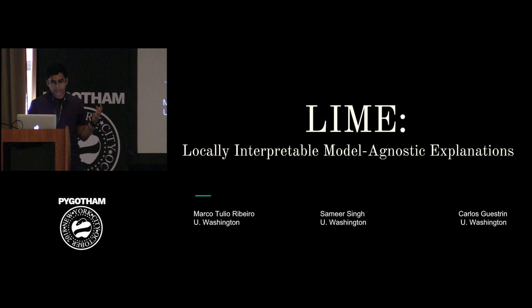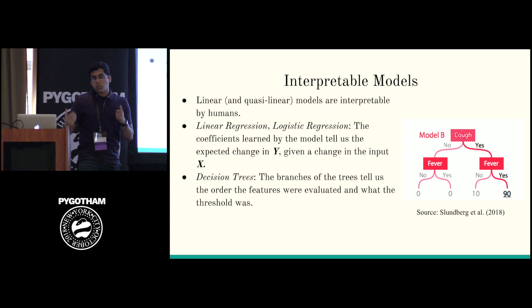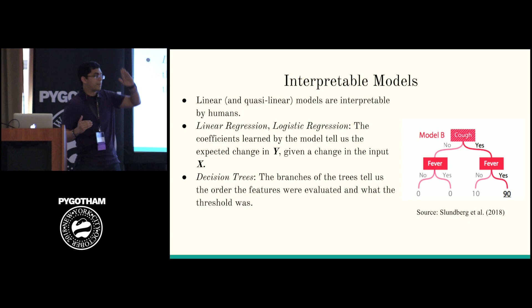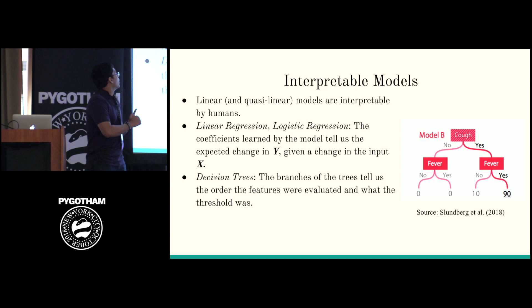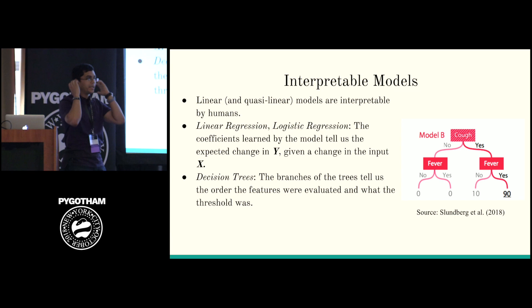Let's talk about interpretable models. Models that are usually interpretable are linear models or quasi-linear models: linear regression, logistic regression, decision trees — models that really just make lines. We like lines. Linear regression is easy to understand: X goes up, Y goes up; X goes down, Y goes down. We as humans can understand that pretty easily.